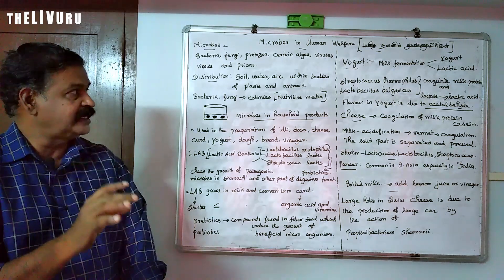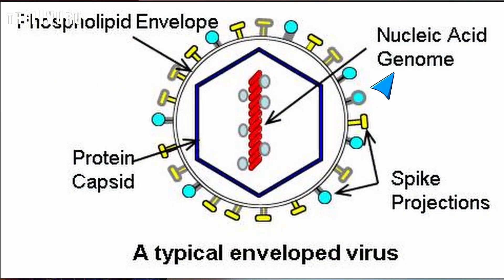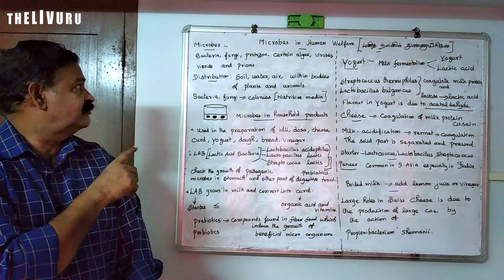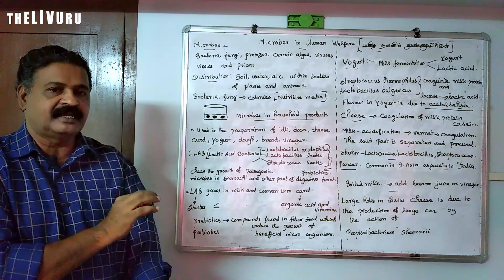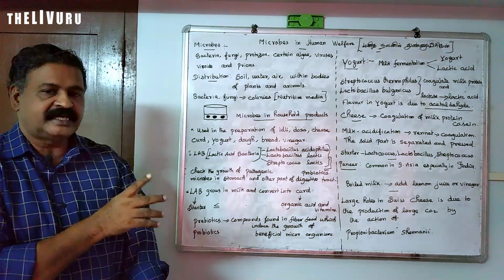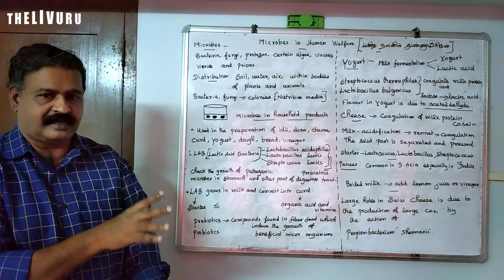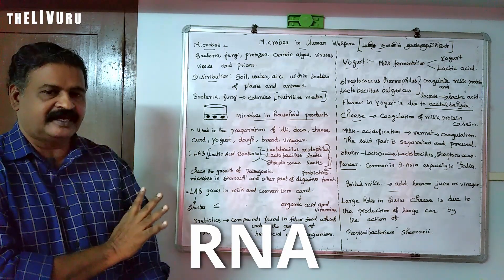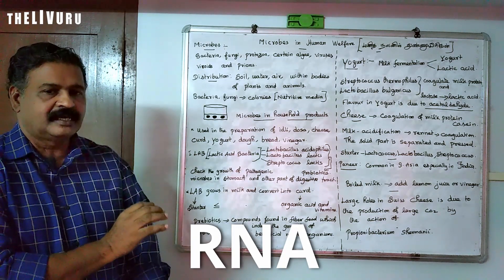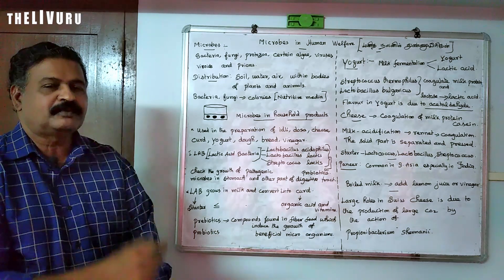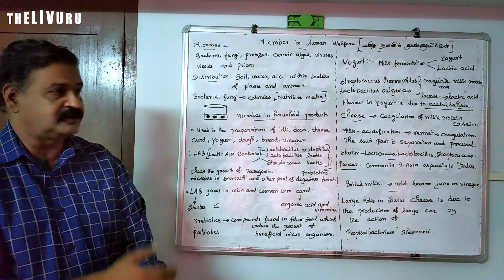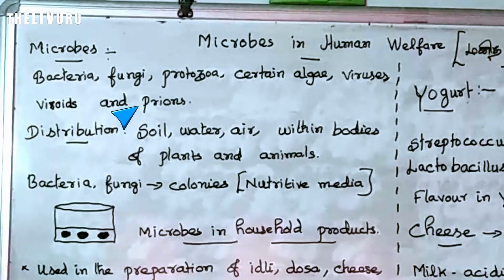Viruses have a genetic material and a protein cover. In a virus, the genetic material is either DNA or RNA. Viroids also have genetic material — DNA — but there will be no protein cover. So anyway, viroids are also pathogenic. And prions.